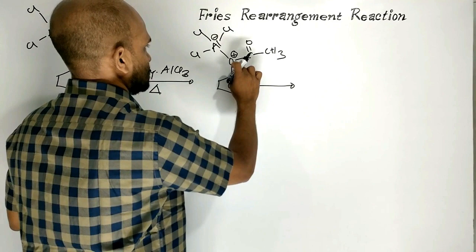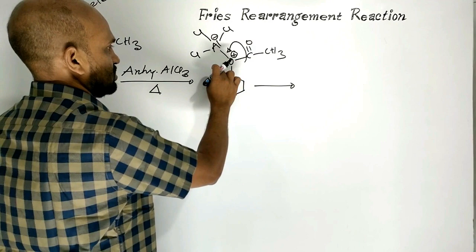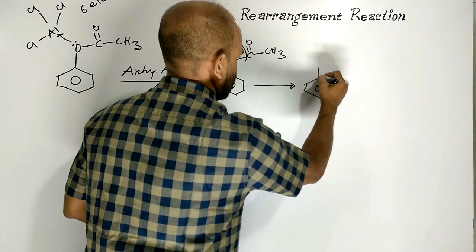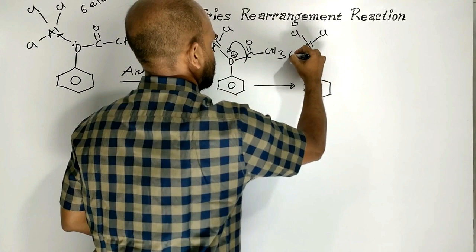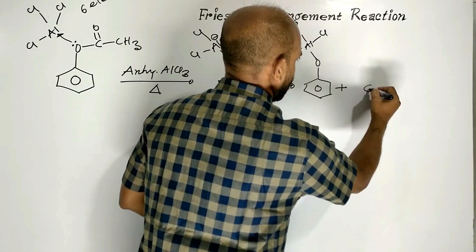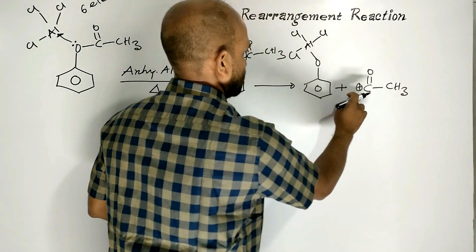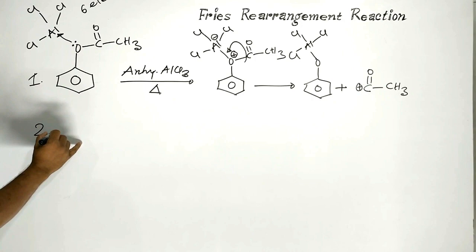This complex undergoes dissociation: the oxygen-carbon bond undergoes heterolytic fission. As a result, the phenoxide ion with aluminium and three chlorine atoms is formed, plus an acetyl electrophile is formed from this reaction. This is step 1.